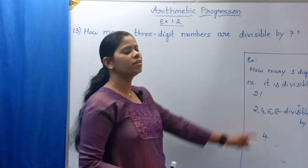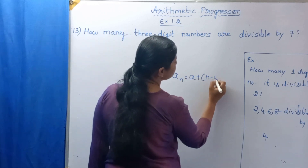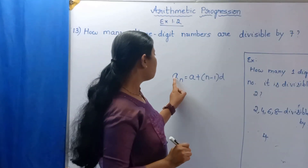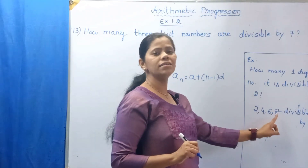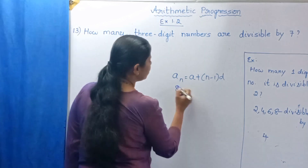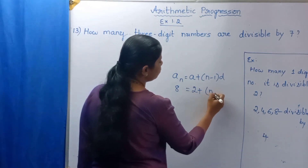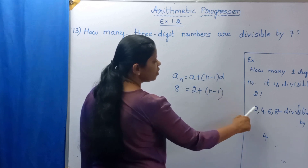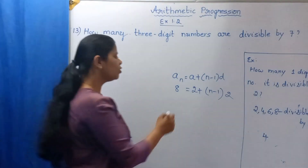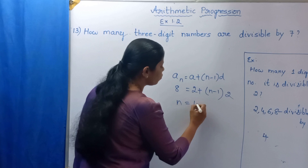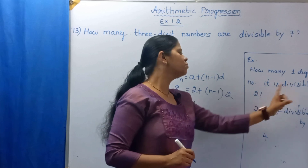Now, how do you apply a formula for this? That is, An = A + (N−1) × D. In the place of An, you substitute 8, because 8 is the last term. 8 = 2 + (N−1) × 2, since 4 − 2 = 2. After solving this, you get N = 4, meaning there are 4 one-digit numbers divisible by 2.